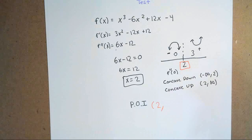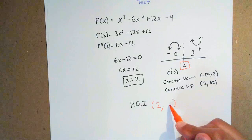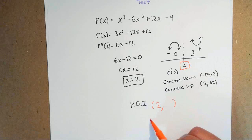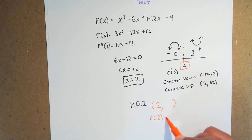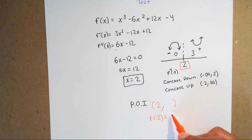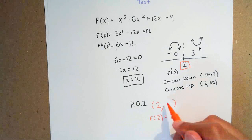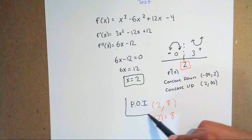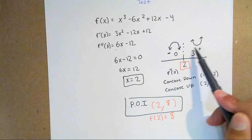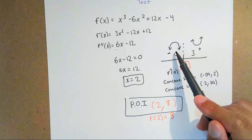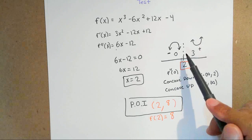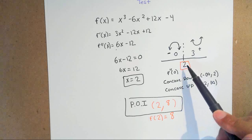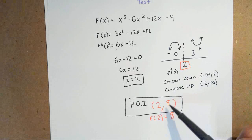So you write 2 comma something — and to find the y-coordinate, you plug 2 into your original equation, and you get 8. That means we have a point of inflection at (2, 8). Remember, the only time you have a point of inflection is when intervals change from concave upward to downward or downward to upward. Also, the critical number cannot be a vertical asymptote — if it is, you can't have a point of inflection. In this case you get a real point, so the point of inflection is at (2, 8).